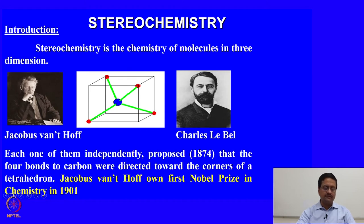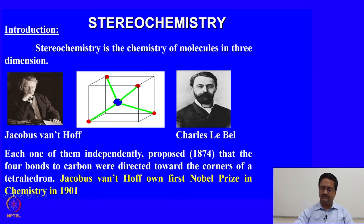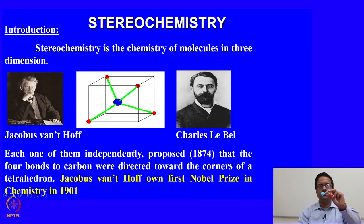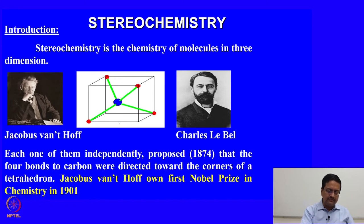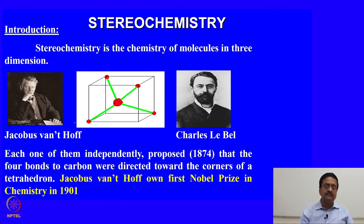In 1874, Jacob van't Hoff and Charles Le Bel independently proposed that the carbon atom has four bonds in tetrahedral orientations. If a carbon atom is at the center with its four bonds, those four bonds form a tetrahedron. If this tetrahedron is drawn inside a cube, the central carbon atom occupies the center and the four substituents form the corners of a cube.